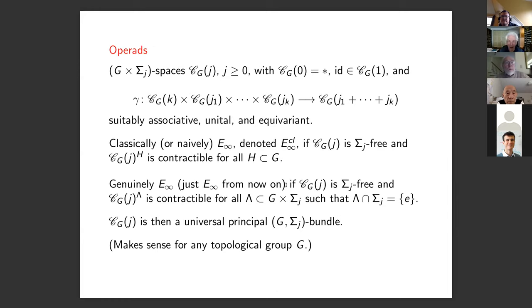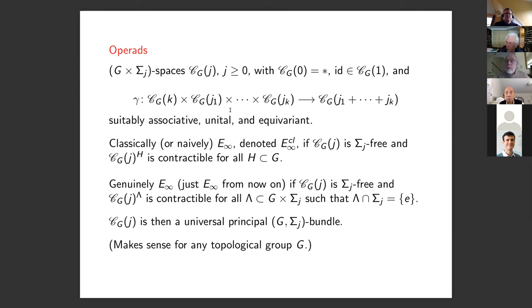Everybody knows what an operad is. You have spaces with an action by the symmetric group, and also our finite group G, and structure maps. These are designed to record actions on spaces where you have J-fold multiplications, all compatible up to homotopy, with higher homotopies conveniently hidden in elementary space or category level information.